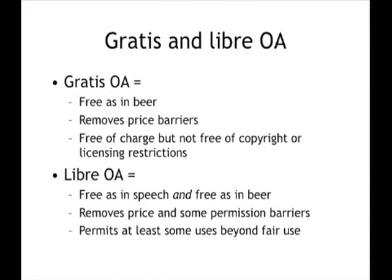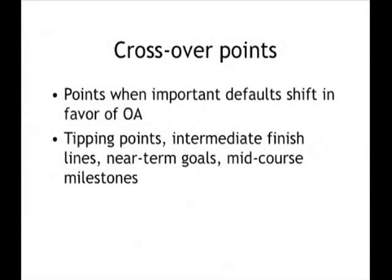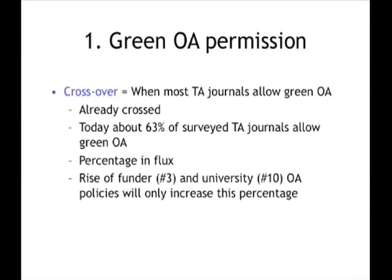I'm going to talk about 12 crossover points in the future of open access, and two of them — the easiest two — have already been accomplished. I'm only including them so you get a sense of what I mean by a crossover point. The first crossover point is when most toll access journals allow green open access to their articles. Today about 63% of surveyed toll access journals do that, meaning they give blanket permission to their authors: if you publish in our journal, you can deposit your peer-reviewed manuscript in a repository without asking for permission.